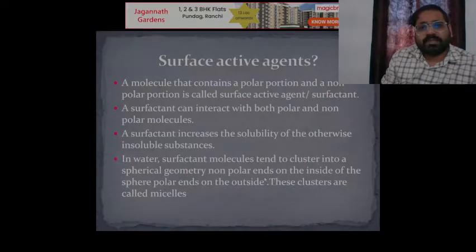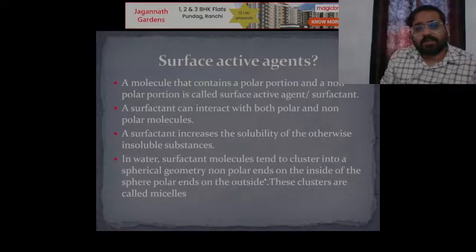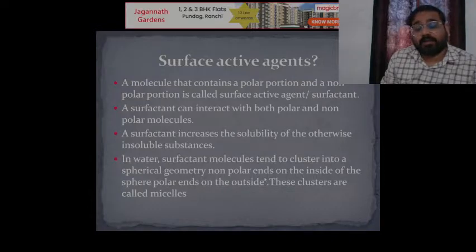A molecule that contains a polar portion and a nonpolar portion is called a surface active agent or surfactant. A surfactant can interact with both polar and nonpolar molecules. Surfactants increase the solubility of otherwise insoluble substances — if a substance is not getting easily soluble, adding some amount of surfactant will decrease the surface tension between the two phases.